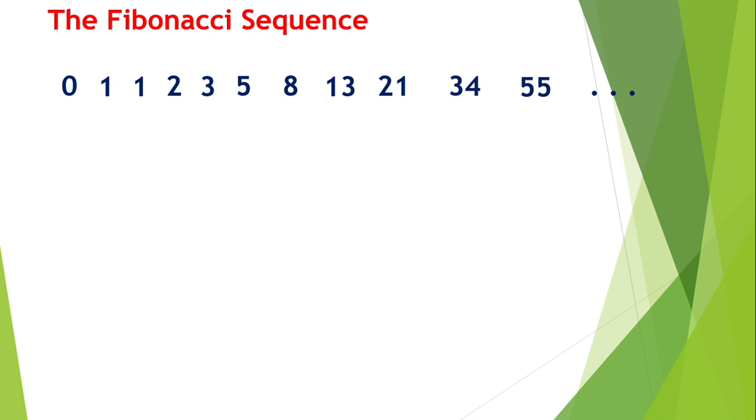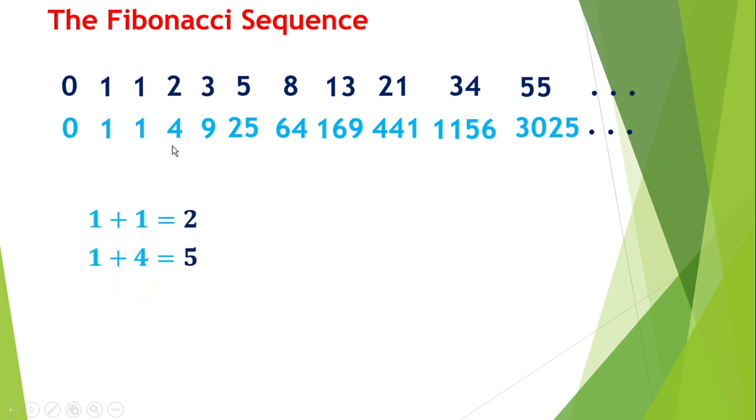Now we square them: zero times zero is zero, one times one is one, two times two is four, and so on. To check: one plus one is two, one plus four is five, four plus nine is thirteen, nine plus twenty-five is thirty-four. You can see that two, five, thirteen all came from our sequence.